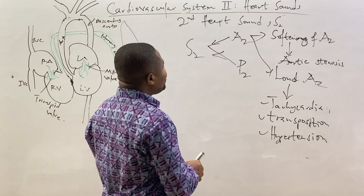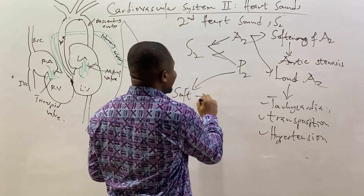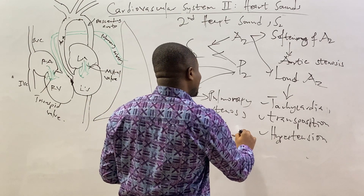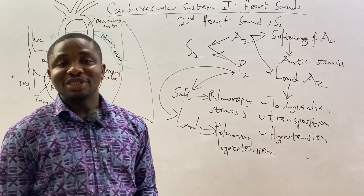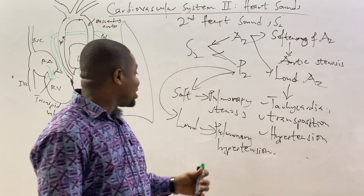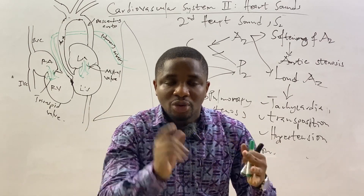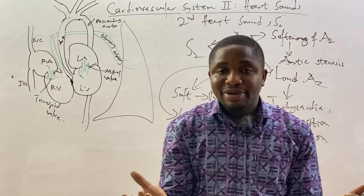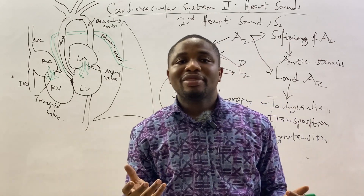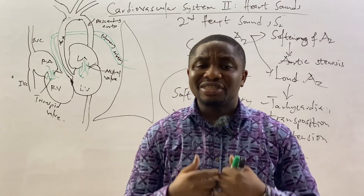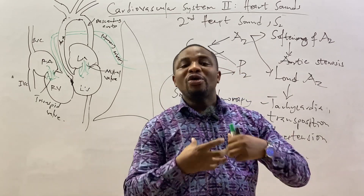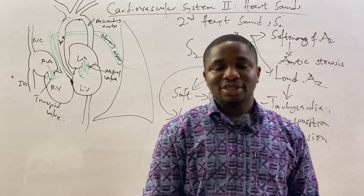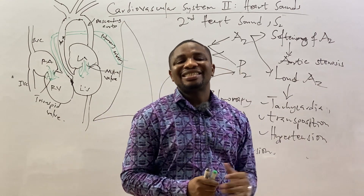For the P2 component, it would be soft in the case of pulmonary stenosis, and it would be loud in the case of pulmonary hypertension. The trick to remember is that just as the tricuspid and mitral valves close together to form S1, the aortic and pulmonary valves move together to form S2 — like twins. That is the first heart sound and the second heart sound covered.